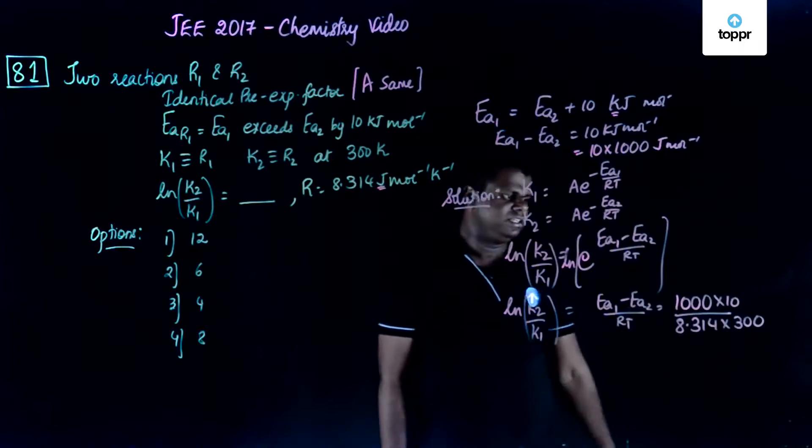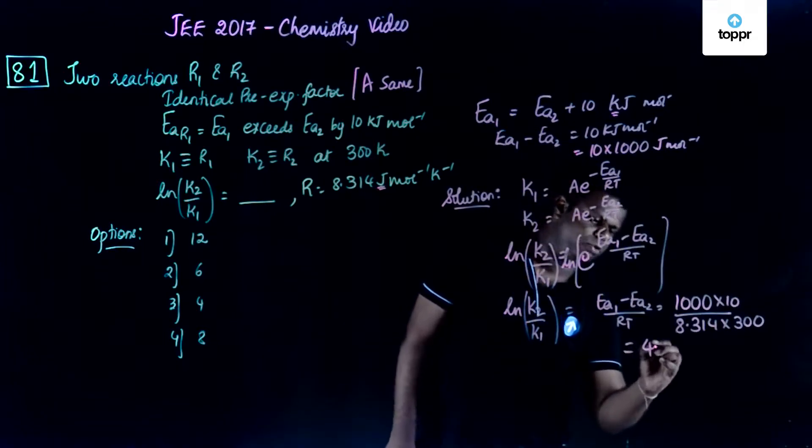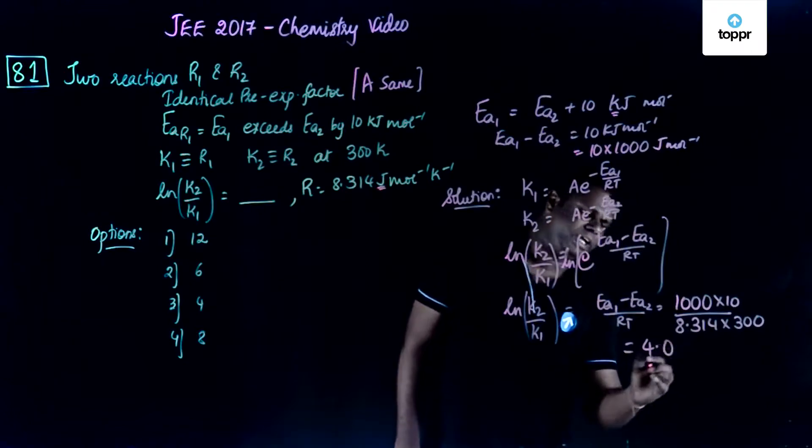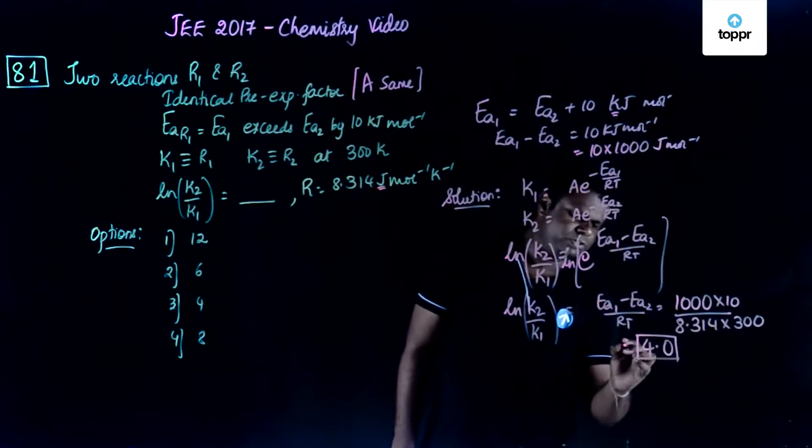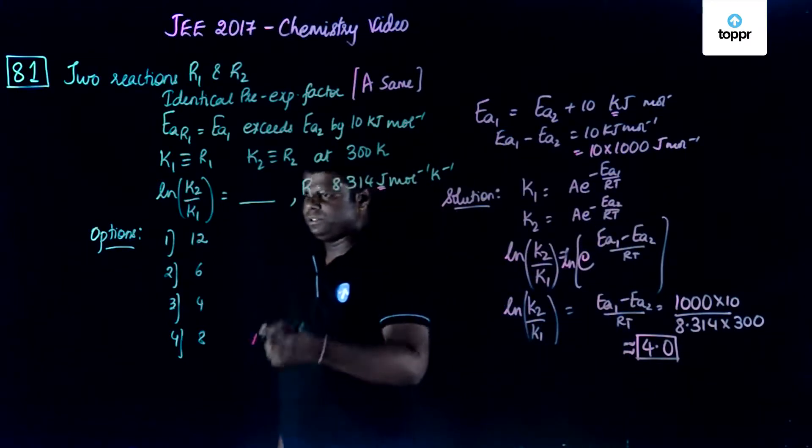I would write 1000 into 10 divided by R is 8.314 and temperature is 300. If you solve this, you get a value like 4.009 or 4.09, so the value comes closer to 4.0.